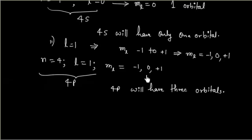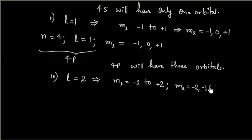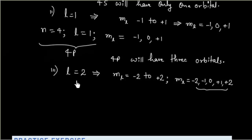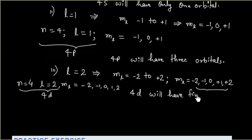For l equal to 2, ML ranges from minus 2 to plus 2. So ML equal to minus 2, minus 1, 0, plus 1, and plus 2 — five possible values, meaning five orbitals are possible. So 4d has 5 orbitals.